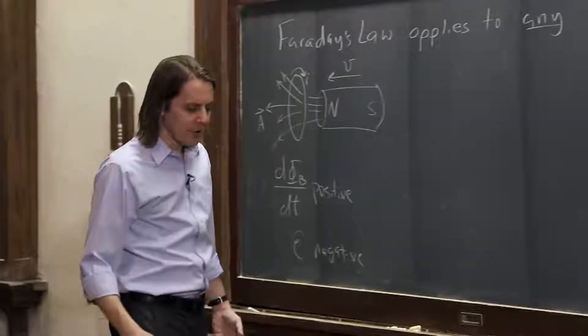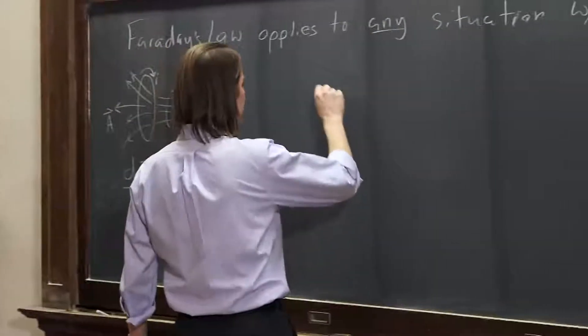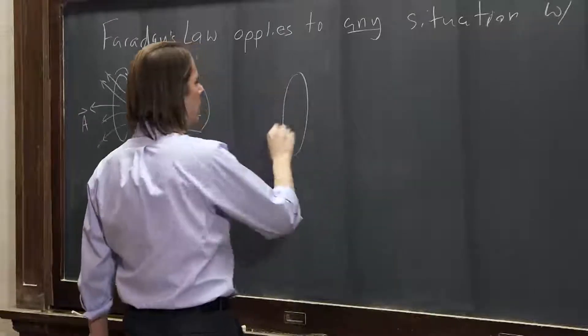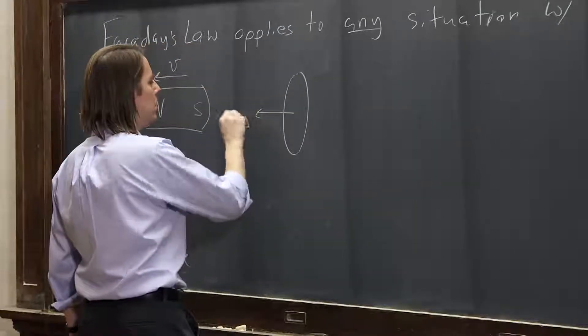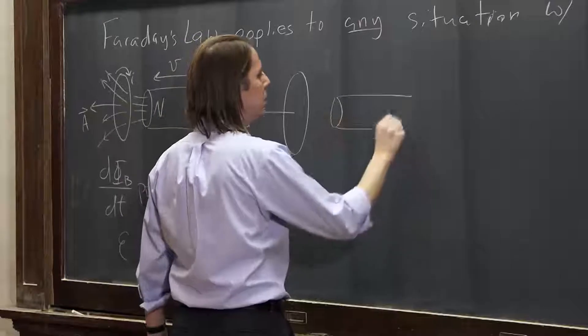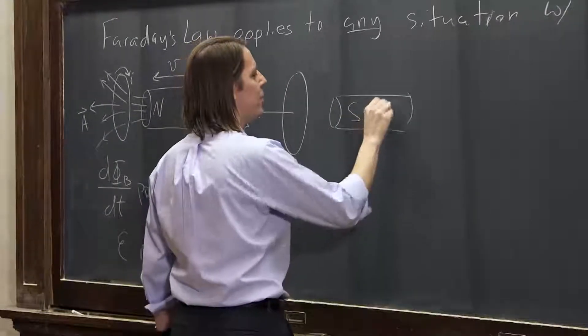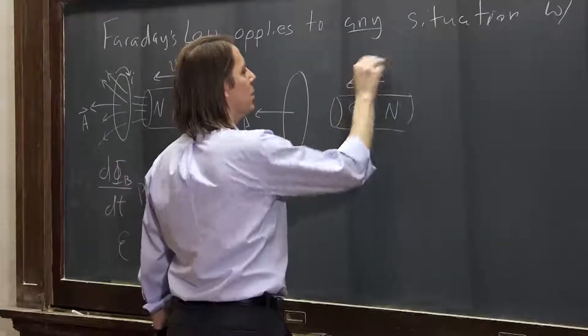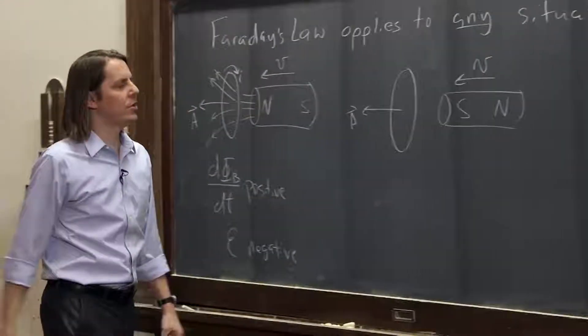But now we can compare different kinds of cases. What if we had the same thing - loop, area vector, magnet like that - but now we have the south pole here and the north pole here, but we still have it move towards the loop.